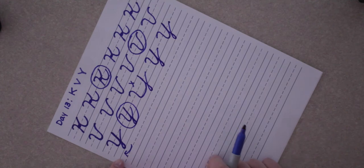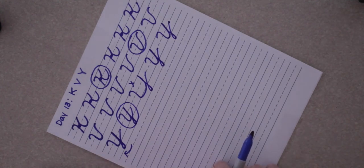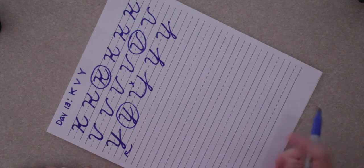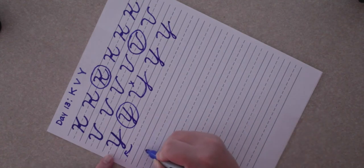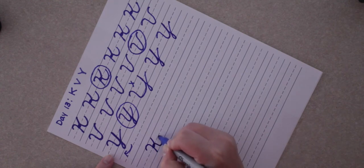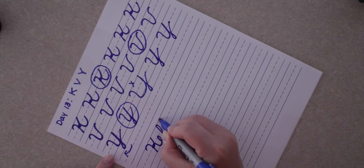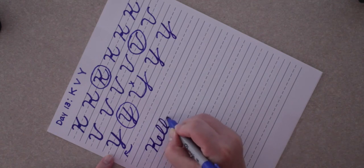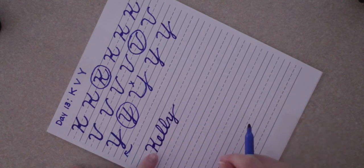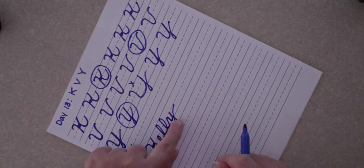We're going to practice some names with these letters. The first thing we're going to practice is the name Kelly, K-E-L-L-Y. So we'll make our capital K, and then straight into our E, L, L, and then our lowercase Y, just like that. K-E-L-L-Y.